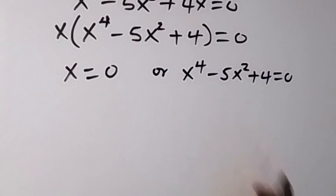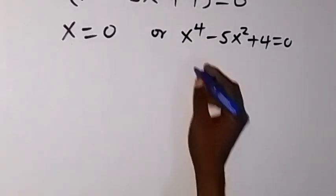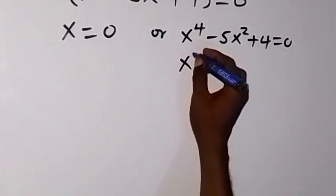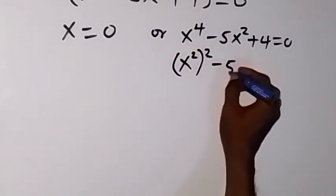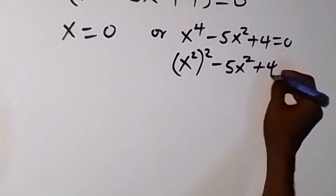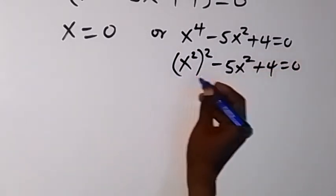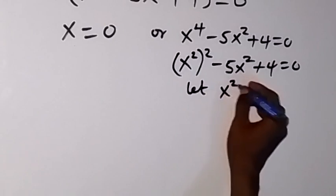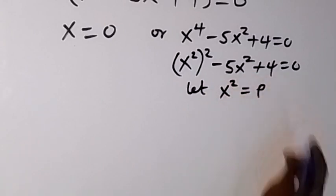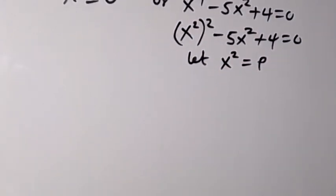Now we can rewrite this and say let this be (x²)² - 5x² + 4 = 0. From here I can say let x² be a letter, let's say p. Let p represent x².